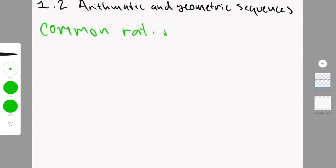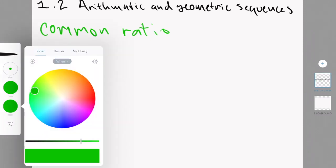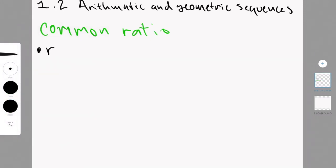Now, if you talk about geometric sequences, they have a common ratio. The common ratio is noted by an R and can be found by taking UN and dividing it by UN minus 1. So that would be taking a term and then dividing it by the previous term. So that could be U2 divided by U1, for instance.